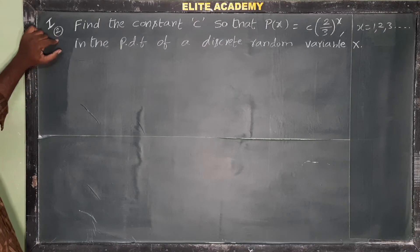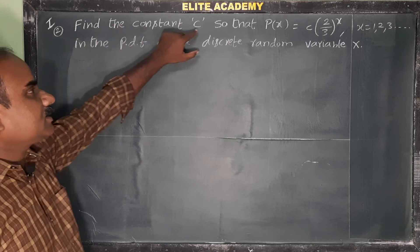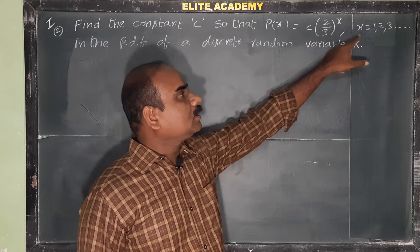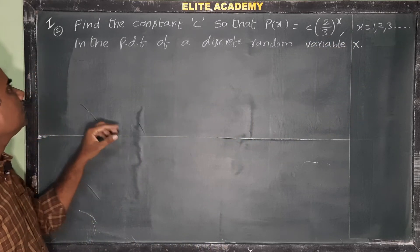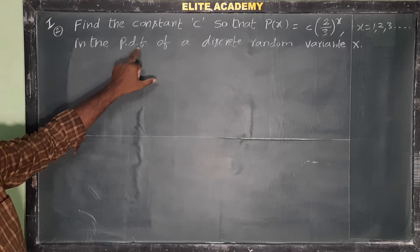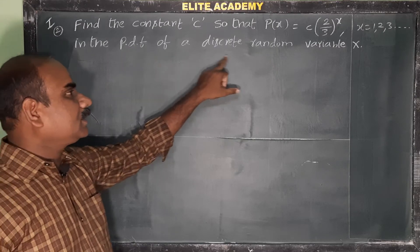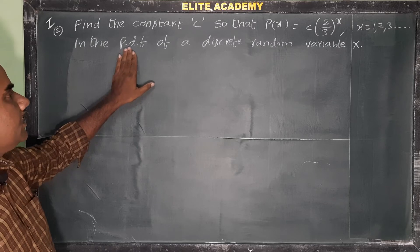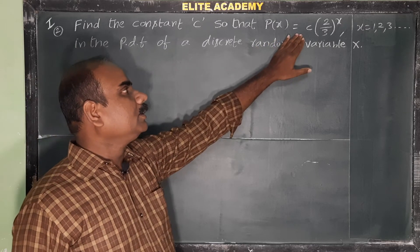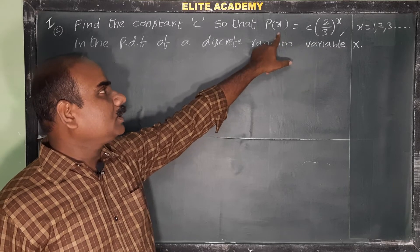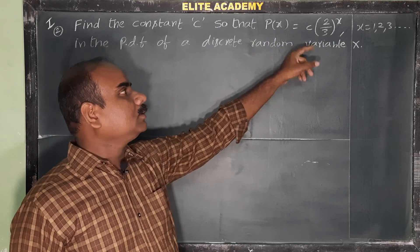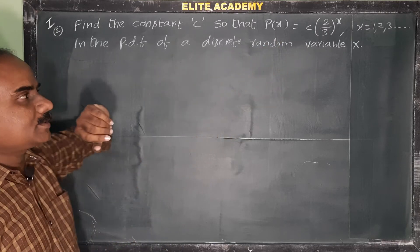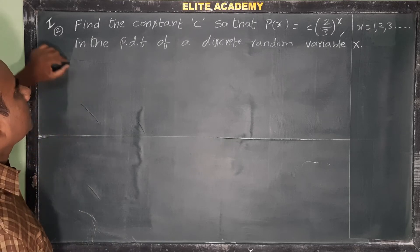Okay, Roman number one, second question: find the constraint c so that P(x) = c·(2/3)^x for x = 1, 2, 3, and so on, is a valid probability distribution function (PDF) of a discrete random variable x. These are the probabilities defined for x = 1, 2, 3 and so on — for example, P(1) = c·(2/3)^1 and P(2) = c·(2/3)^2.